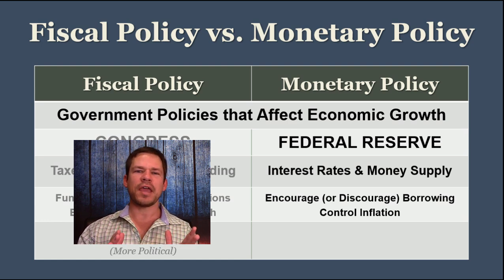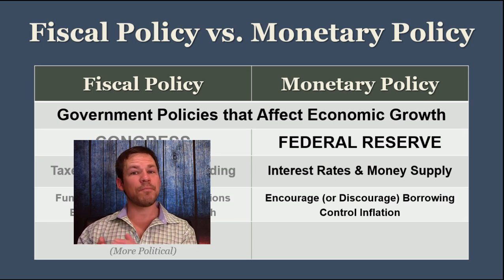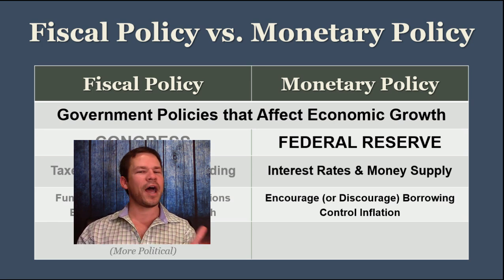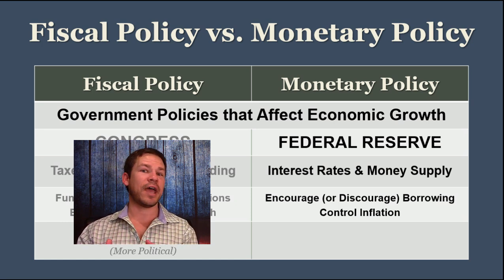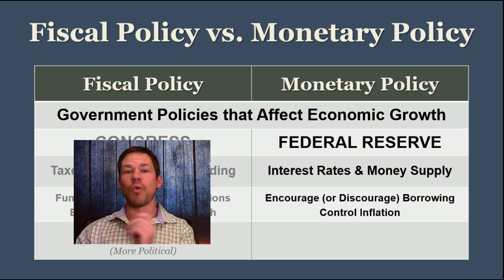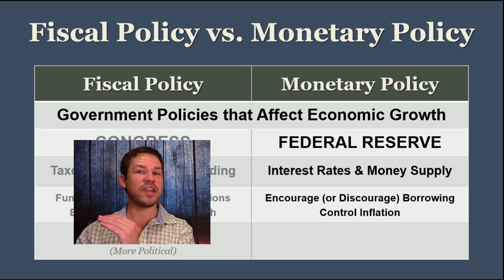Speaking of keeping things at an even pace, the regulation of the money supply is about controlling inflation. There's going to be a bit of inflation — not a bad thing — but when inflation gets to be too much, such as in the 1970s, that creates problems because people want their money to be worth something and they don't want to continually lose value.